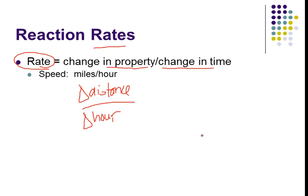But for chemical reactions, they don't travel, so we can't talk about distance. But we could talk about how moles change with time — a change in moles over a change in time — or a change in molarity, a concentration change. There are lots of different things we can measure about reactions to talk about if the reaction is going quickly or slowly. It's very analogous to miles per hour.